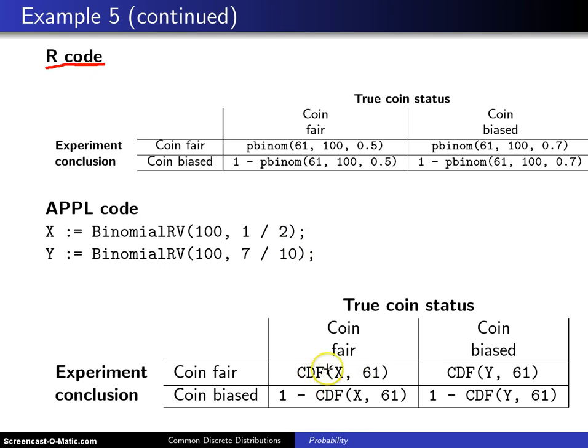And then you simply call the CDF function. And notice in the fair coin, we use X, which is the model with a p-value of 0.5. And in the second column, we use Y, which is the binomial model with 7 tenths. And here is the probability of 61 or fewer. And here is the probability of 62 or more. Either using R or using Maple, you get the very same numbers. And those appear on the next slide.